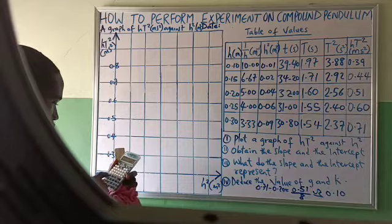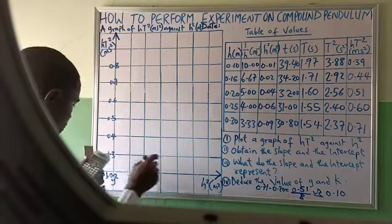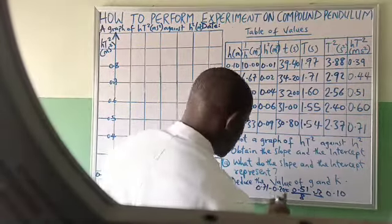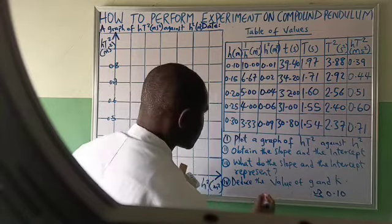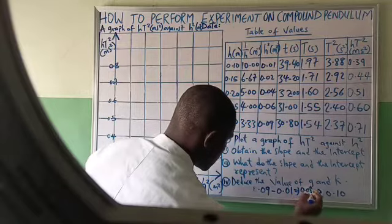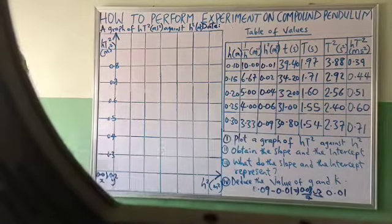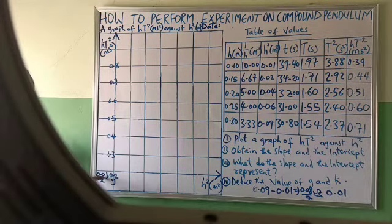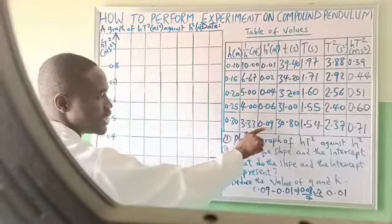I now calculate: 0.09 minus 0.01 gives 0.08, divided by 7 spaces, which gives approximately 0.01 per space. So the horizontal axis reads: 0.01, 0.02, 0.03, 0.04, 0.05, 0.06, 0.07, 0.08. However, stopping at 0.08 means the value 0.09 is not accommodated.